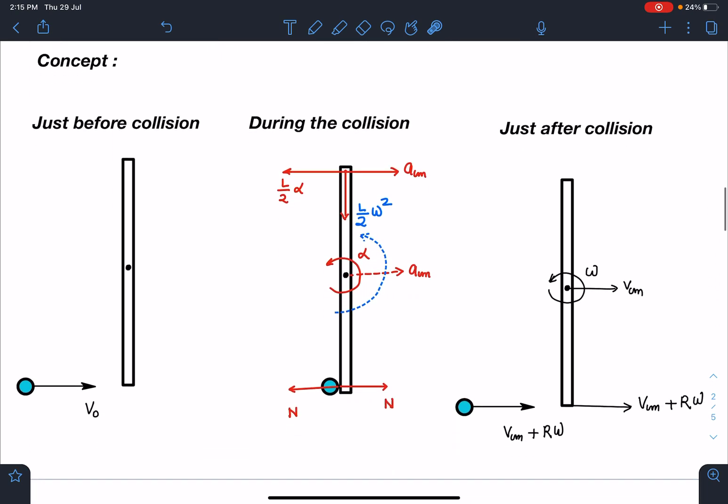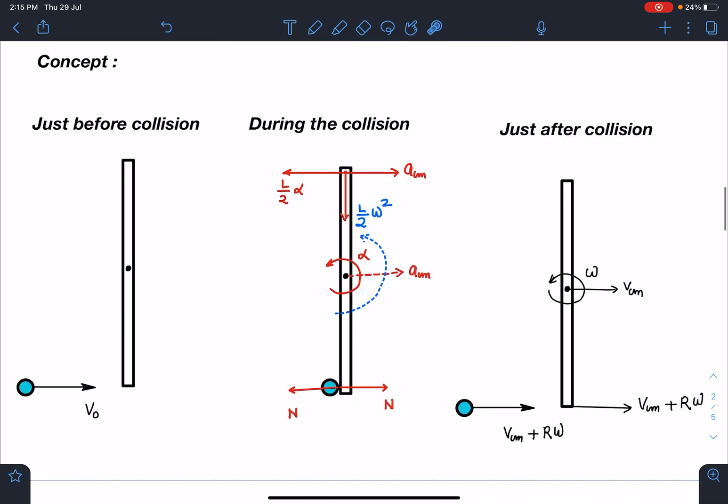Let's discuss this problem conceptually. Let's draw the three scenarios: just before collision, during the collision, and just after collision. Just before collision, this particle is approaching the lowermost point of this rod and the entire system is on a horizontal surface or gravity-free space.